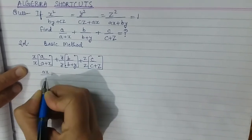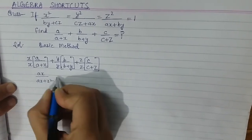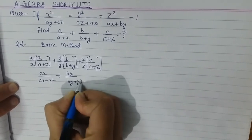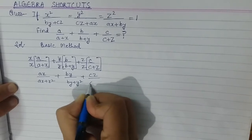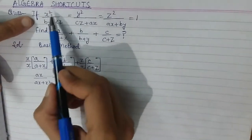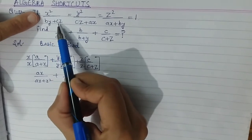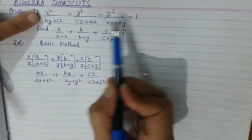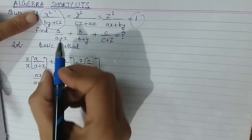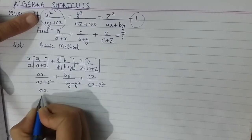So this expression becomes: ax divided by (ax + x²), plus by divided by (by + y²), plus cz divided by (cz + z²). Now we look at the given part: x² divided by (by + cz) equals 1, so the value of x² is (by + cz). We do cross multiplication, and in place of x² we put this value. So this expression becomes ax divided by (ax + by + cz).